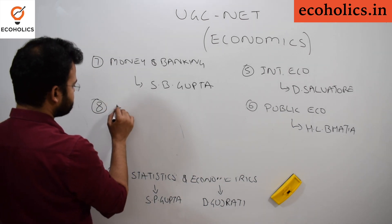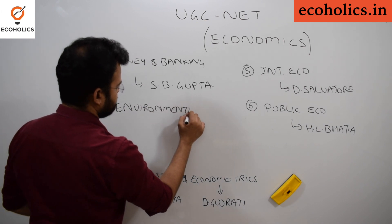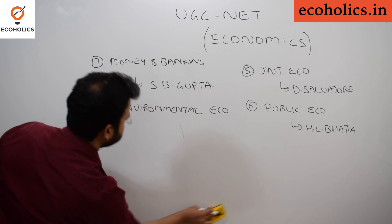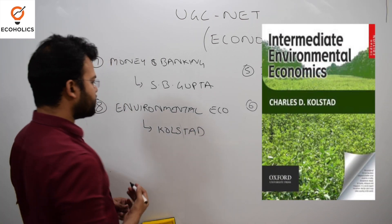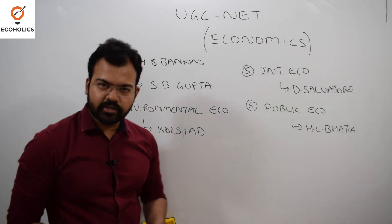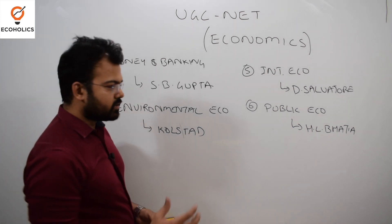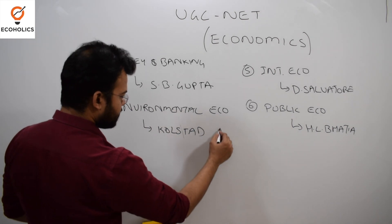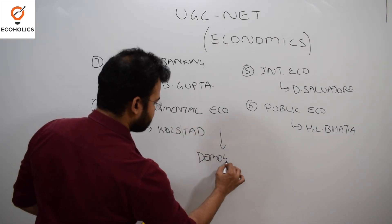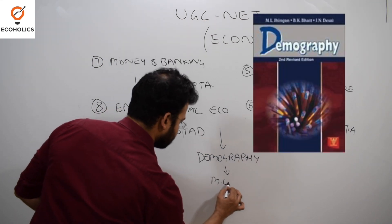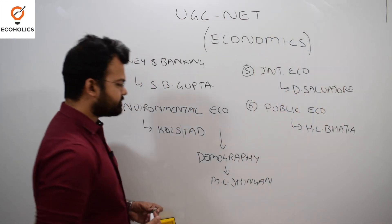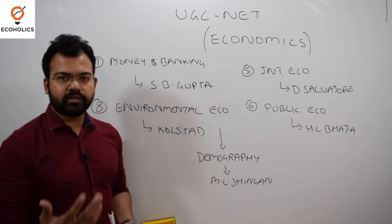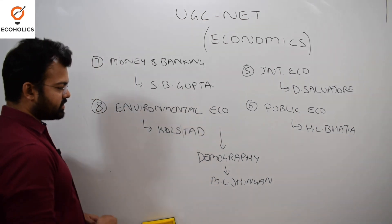The eighth part is environmental economics. For environmental economics, there is one book called Charles Colstead. You can refer to it for a few topics and will find them quite easily, building a solid understanding of the subject. Also within this module is demography. For demography, refer to M.L. Jhingan's book, which gives a lot of coverage for the topics with theories explained quite elaborately.